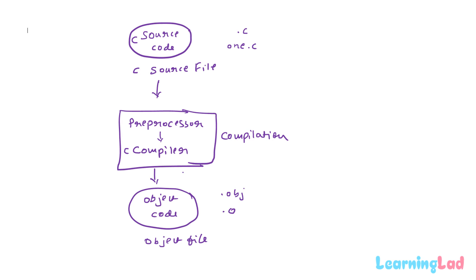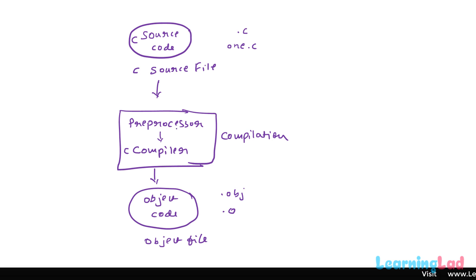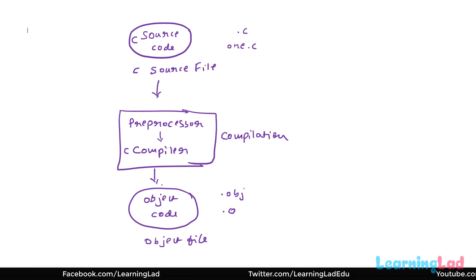Since we are working with C, it is a C compiler that receives the optimized source code and generates machine code. Different C compilers are available — some take the source code and first generate assembly code which is then converted to machine code, while others directly generate machine code from the source code. In summary, the preprocessor produces an optimized form of the source code, and the C compiler then generates the machine code, also called object code.